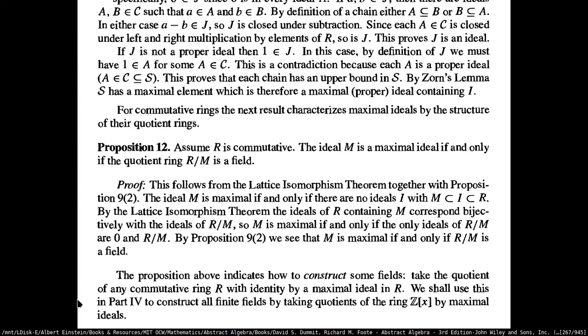An ideal has to be a subring — that's one of the conditions. It has to be closed under multiplication. Assume R is commutative, then the ideal is a maximal ideal if and only if the quotient ring that you get from this ideal is a field.